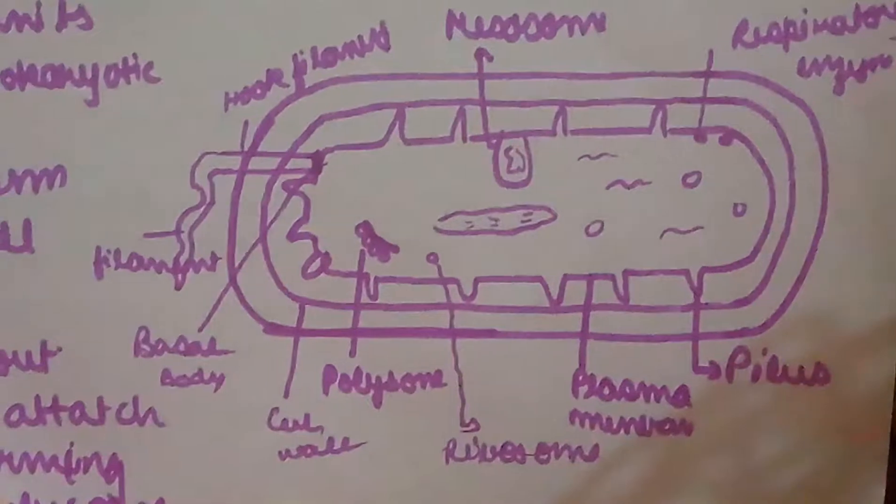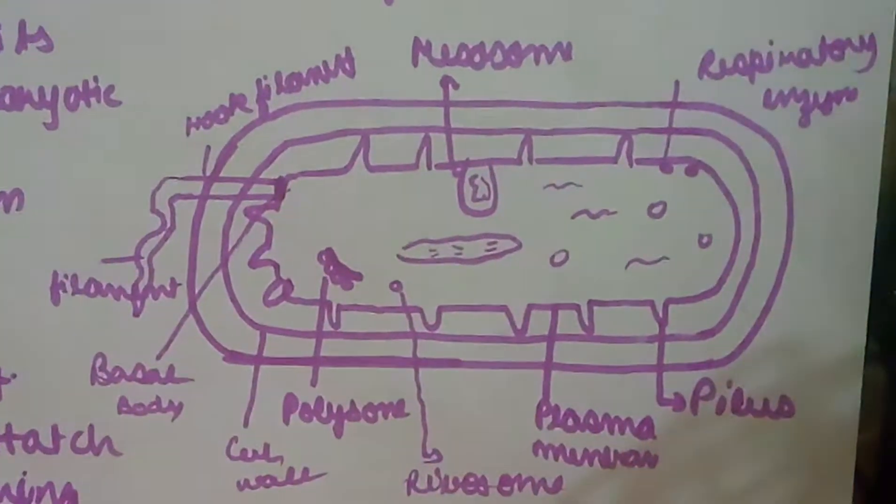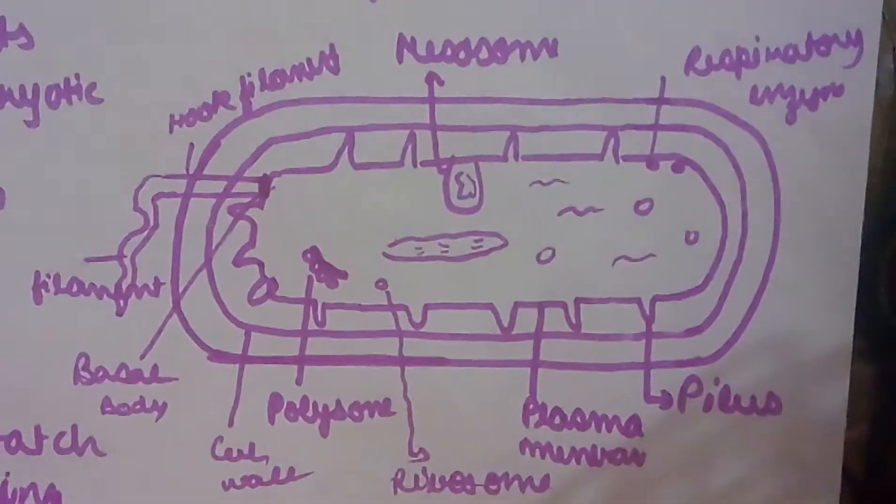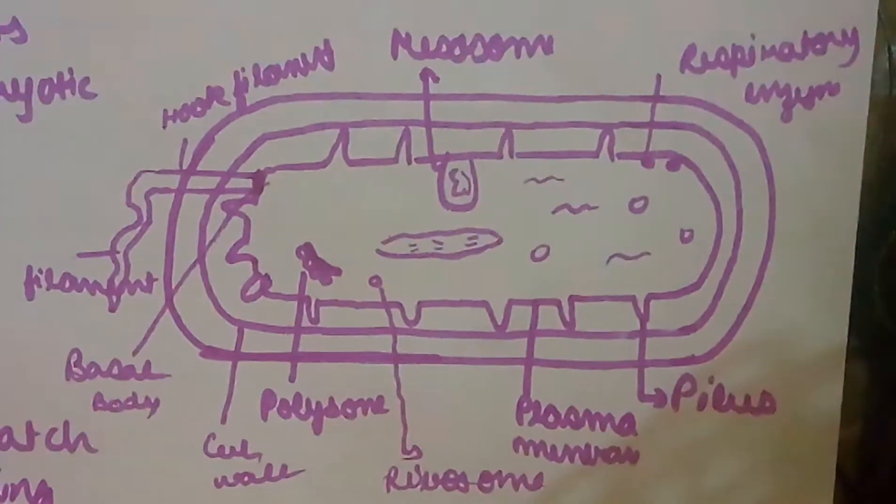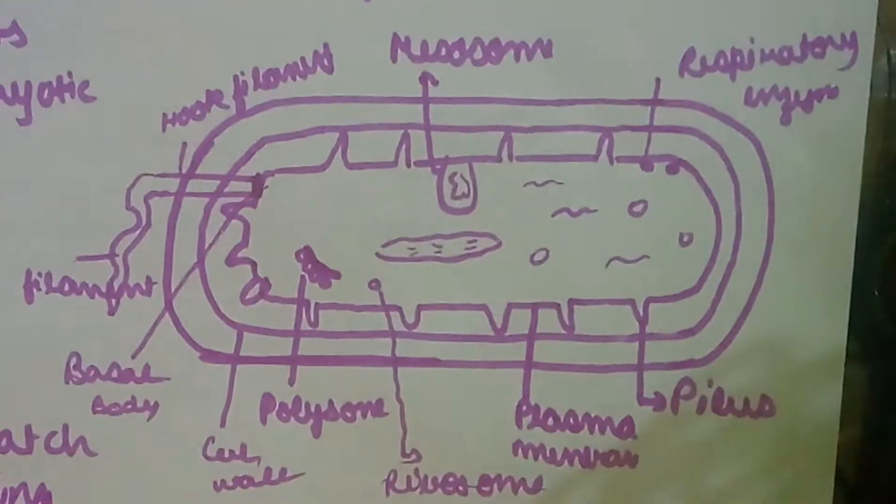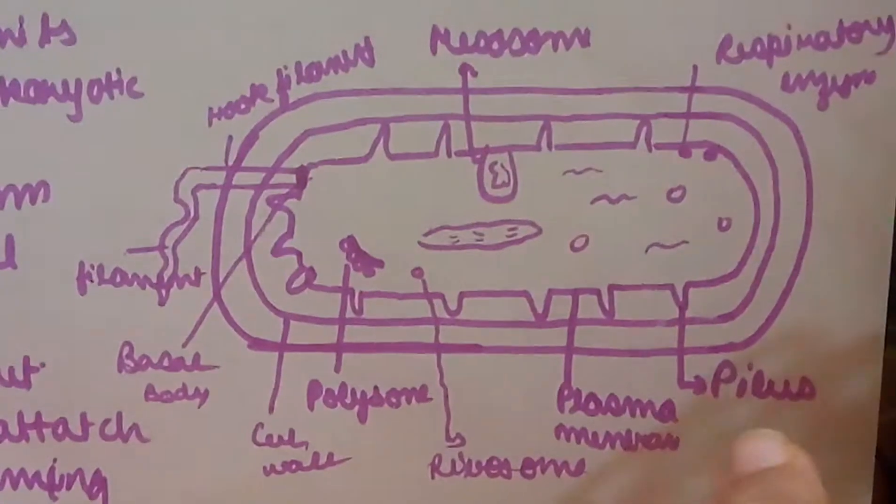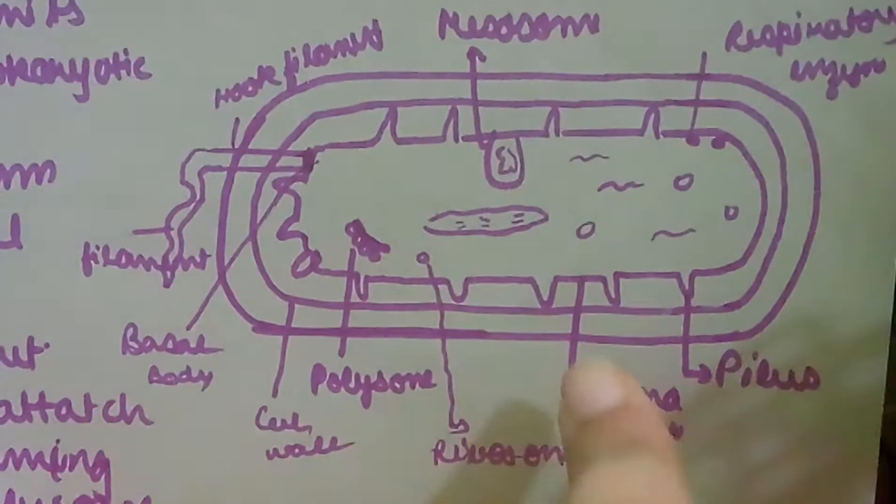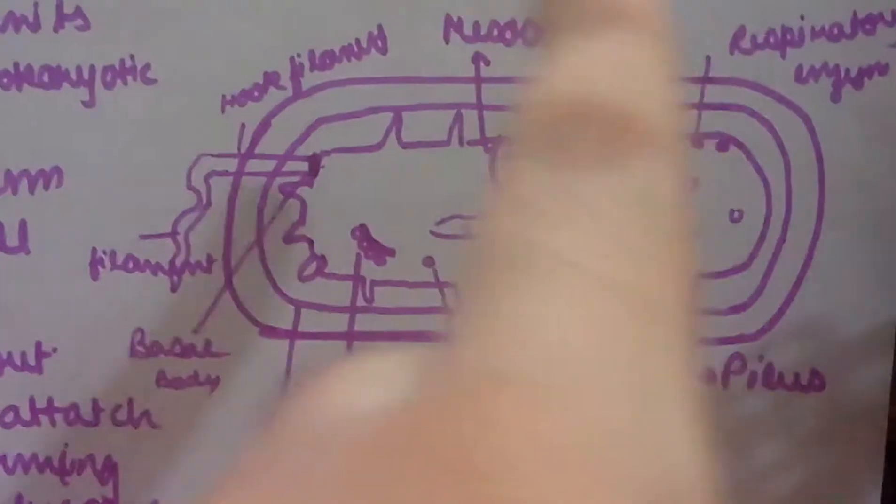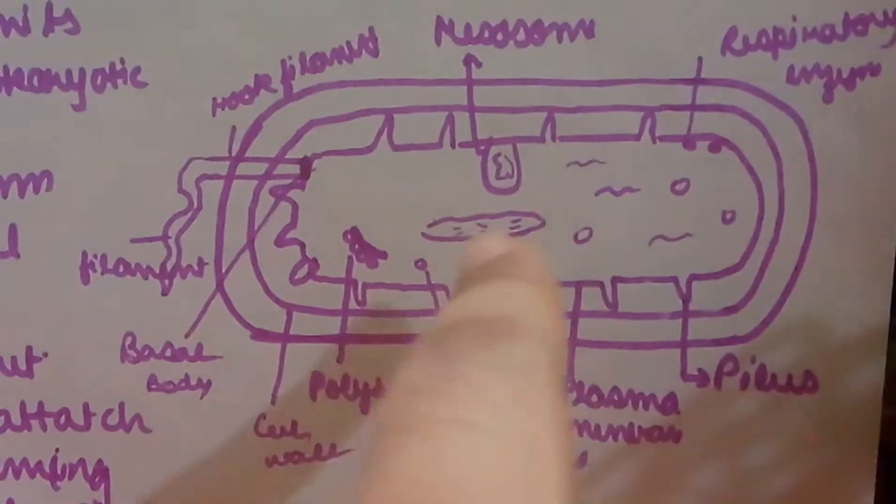These are mesosomes. We had such a wonderful discussion - they are the invagination of the plasma membrane into the cytoplasm. We remember pilus, we know what it is. Plasma membrane you see here. Respiratory enzymes are present here at the corner, somewhere here, just like this.